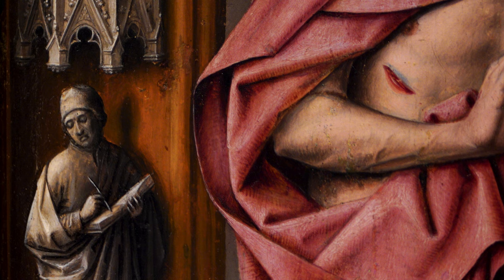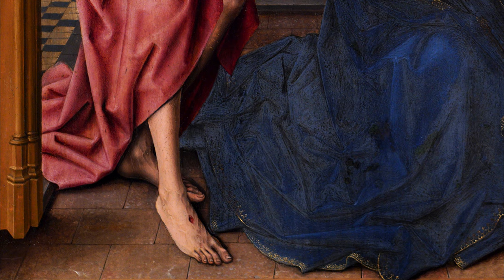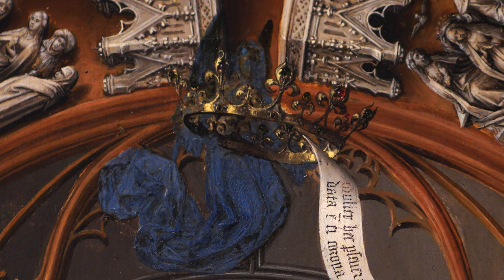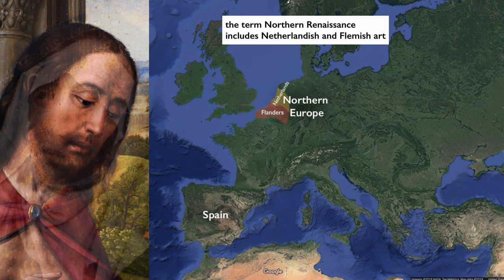Juan de Flandes was an extremely talented painter. He was trained in Bruges, and so he's a Netherlandish artist. We see all of the characteristics that we expect to see in Netherlandish painting of the 15th century.